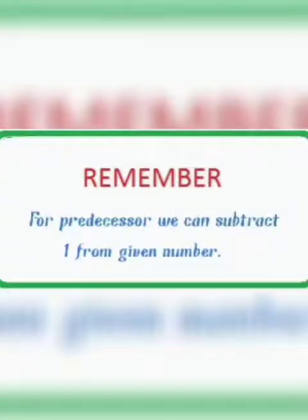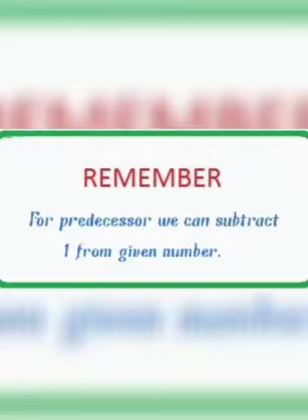For the predecessor, we subtract 1 from the given number. Whatever number is given, minus 1 from it to get the predecessor. For example, the predecessor of 10: subtract 1 from 10, we get 9. So 9 is the predecessor of 10.